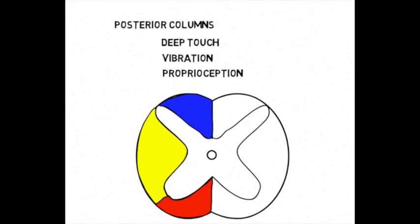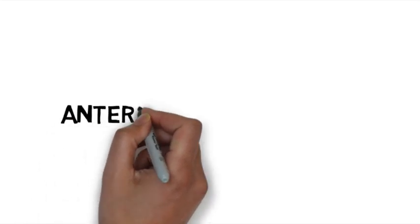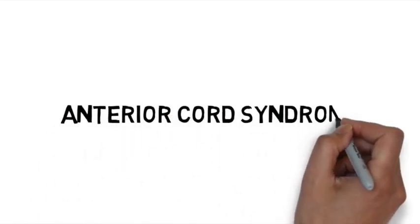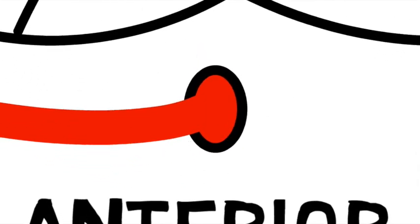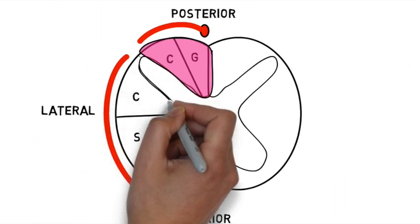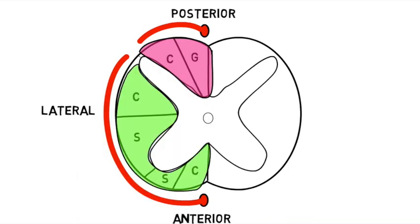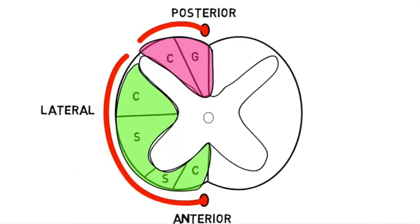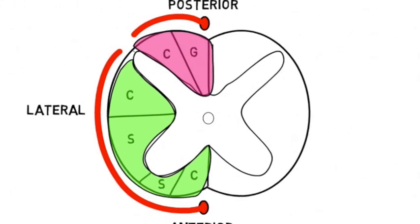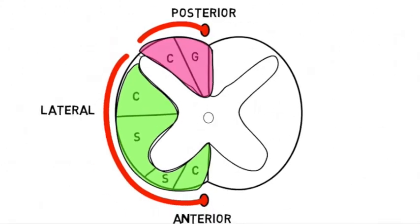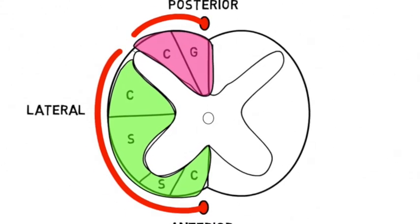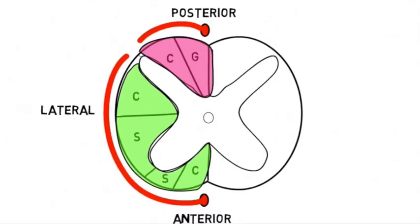The next one is going to be the anterior cord syndrome. This is typically the damage to the anterior spinal artery. You'll lose all your motor function, as well as the light touch and pain and temperature, which will be contralateral if it's only one side of the cord affected.